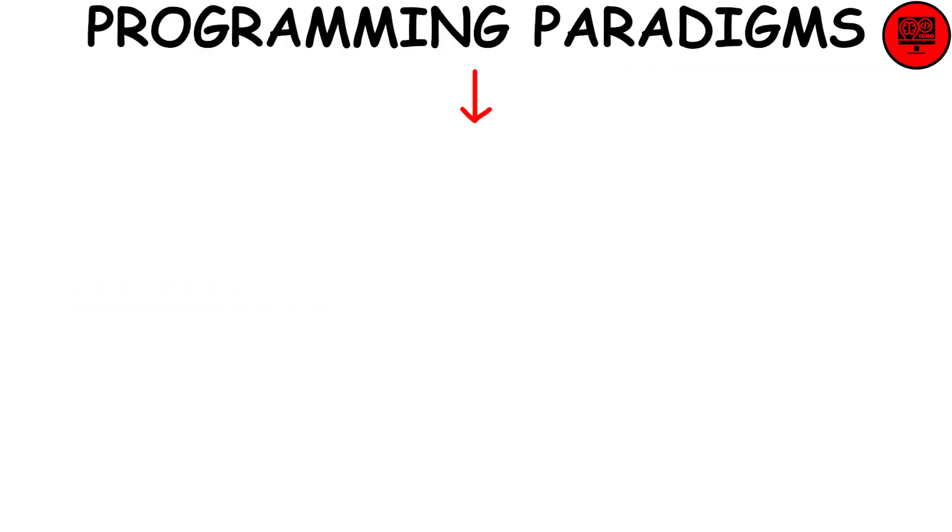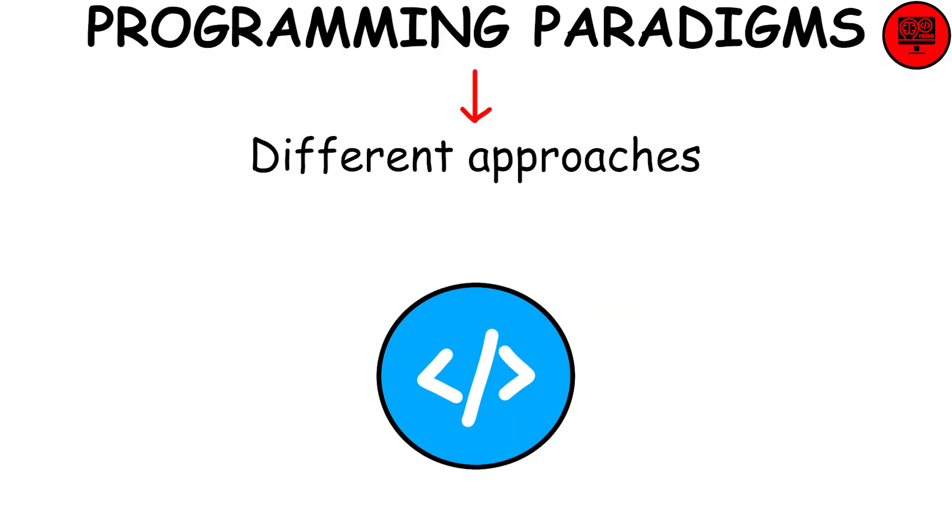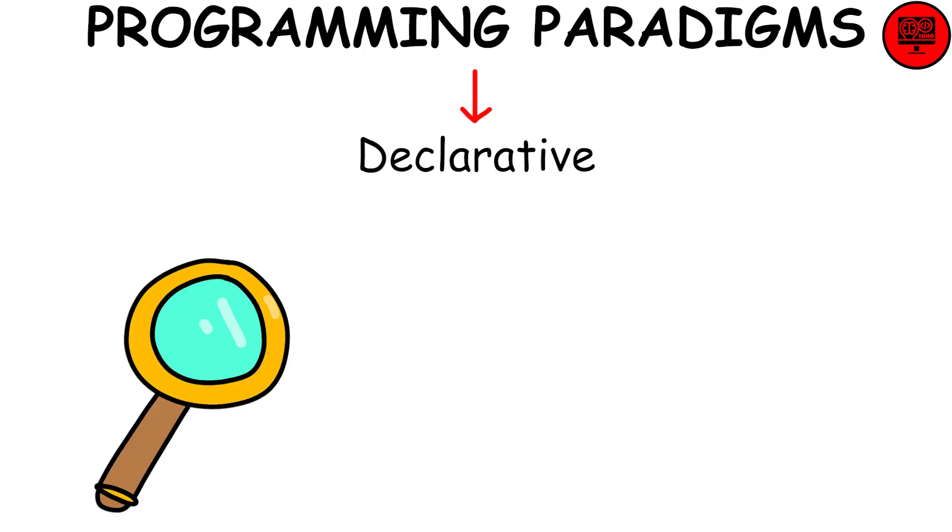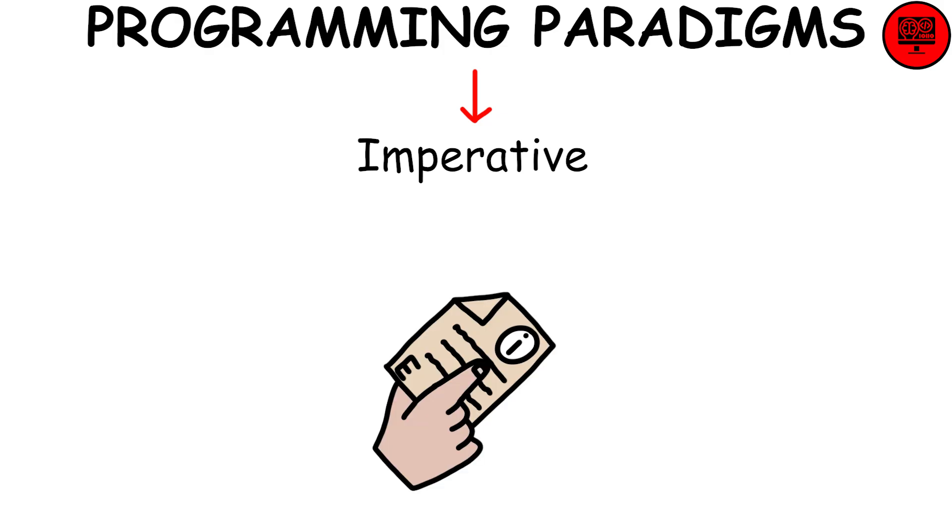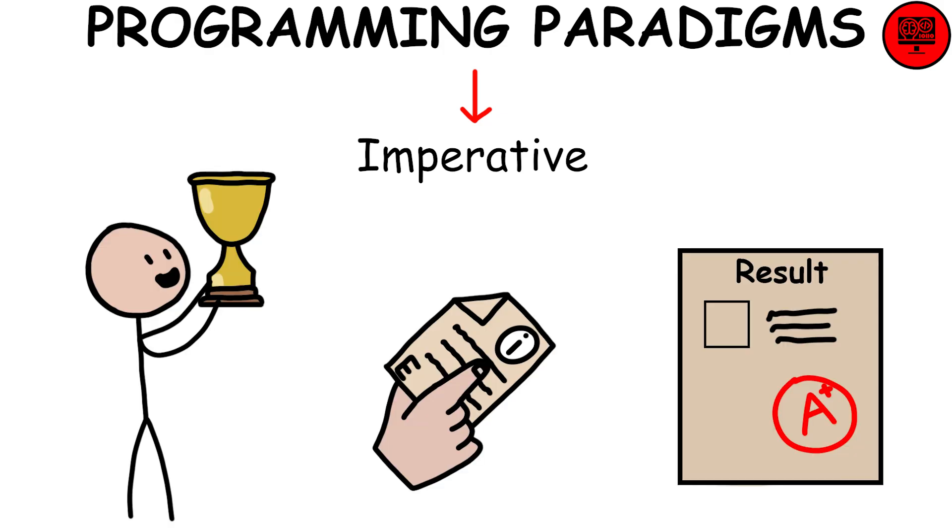Programming Paradigms define different approaches to writing code, such as declarative and imperative programming. Declarative programming focuses on describing what the code does, while imperative programming provides explicit instructions on how to achieve a result.